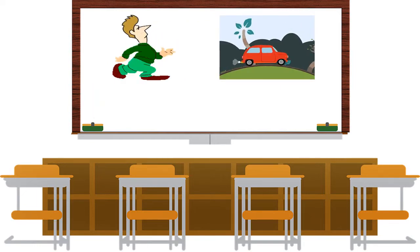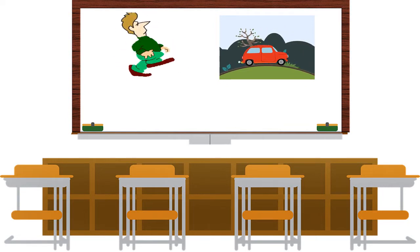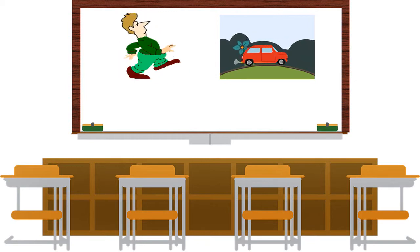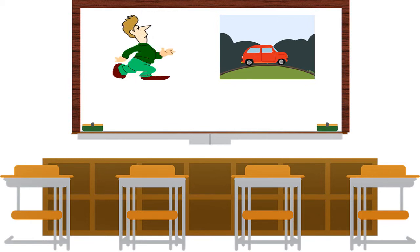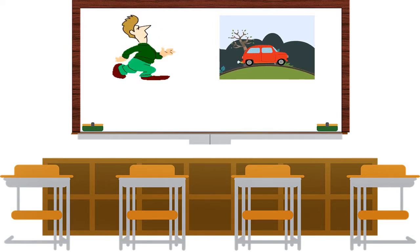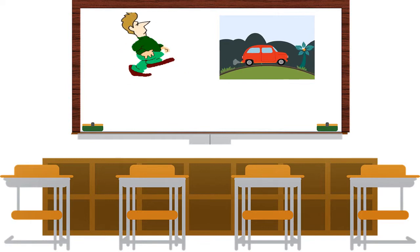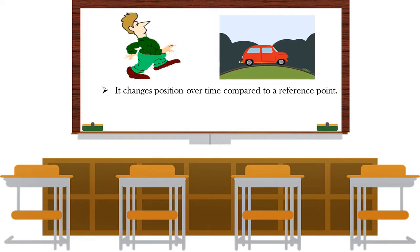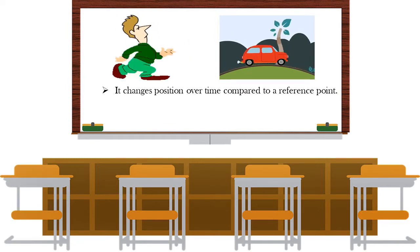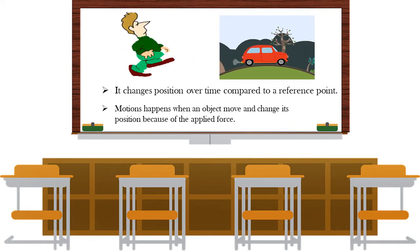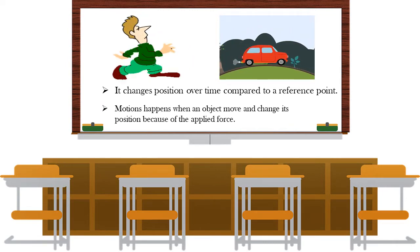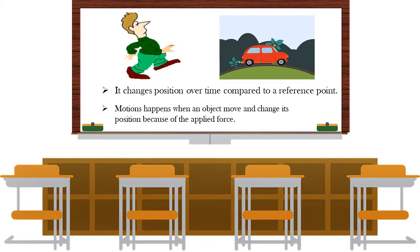Are you familiar with this illustration? Where do we usually see this? We usually see this outside our house or in the streets. Based on the pictures we have, these two pictures demonstrate motion. Motion is a change in position over time compared to a reference point. Motion happens when an object moves and changes its position because of an applied force.